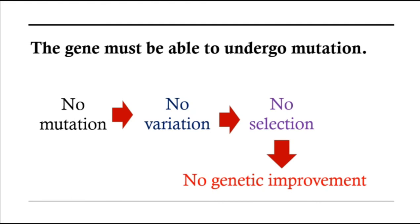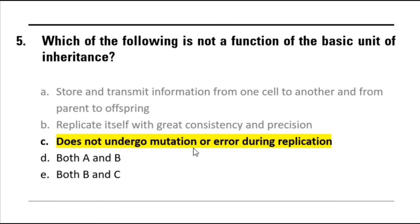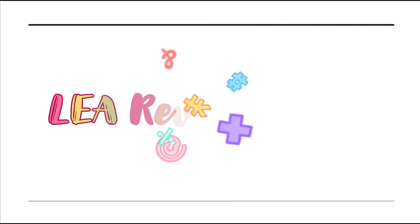So again, the correct answer for question 5 is letter C: does not undergo mutation or error during replication — this is NOT a function. All choices A, B and D are correct functions of the gene. Automatically, letter E is also not the correct answer because B is indeed a function — replication is a function of the gene.